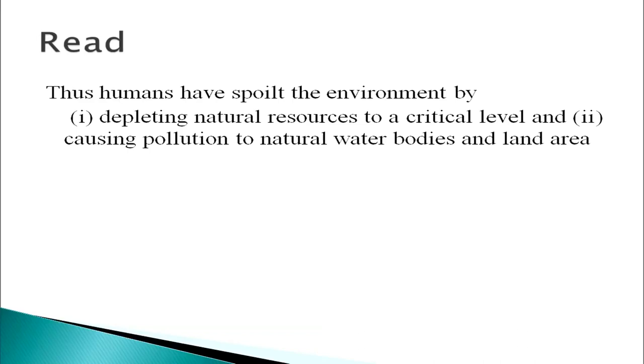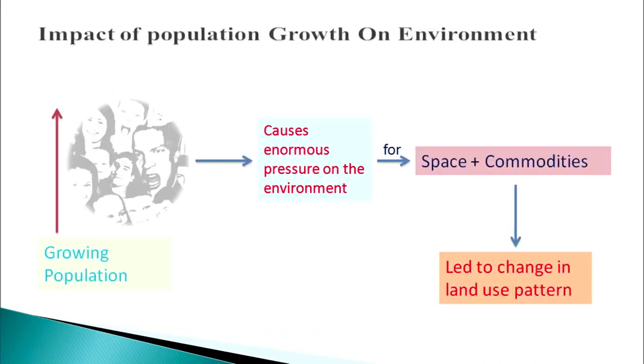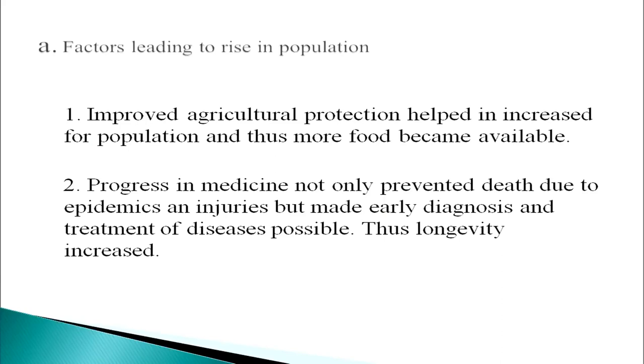Now we come to the impact of population growth on the environment. Five million people lived on earth at the time when agriculture began about 12,000 years ago; the population of our country alone is now well above one billion. This enormous increase in human population is making the future of humans insecure. Factors leading to the rise of population include improved agriculture, which provided protection and more food availability. Progress in medicine not only prevented death due to epidemics and injuries but also made early diagnosis and treatment of diseases possible, thus increasing longevity.